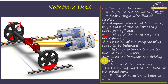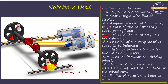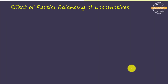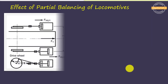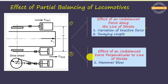Capital L is the distance between the two driving wheels, capital R is the radius of the driving wheel, capital B is the balancing mass to be found, and small b is the radius of rotation at which the balancing mass is to be placed. Due to the unbalanced force along the line of stroke, we have two effects: variation of tractive force and swaying couple. The unbalanced force perpendicular to the line of stroke creates the effect known as hammer blow. We will study these three effects one by one.